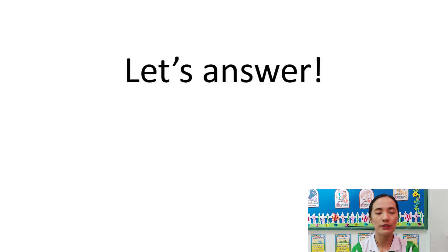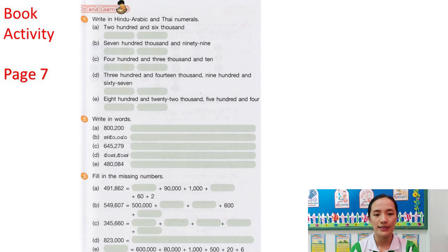Now, let's answer your activity. Please open your book on page 7. Now, I will give you example on how to answer this. Number 1, write in Hindu-Arabic and Thai numerals. So, write your answer inside the box. Follow what I did.